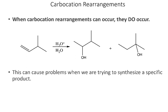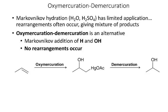One of the problems is: when carbocation rearrangements can occur, they do occur. So if I start with this reactant and I try to do acid-catalyzed hydration, I'm going to get a mixture of products. If I was trying to produce a specific alcohol, this is actually a problem. We would like a way to have regio-specific addition reactions where, when we have these carbocation intermediates, we don't get rearrangement.